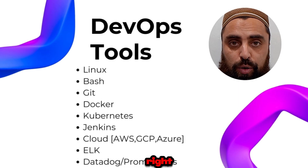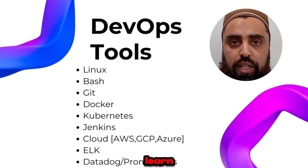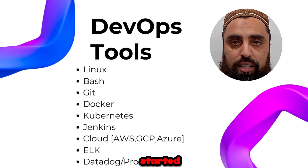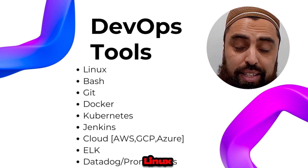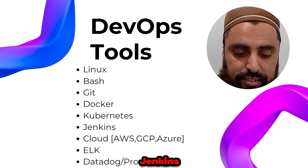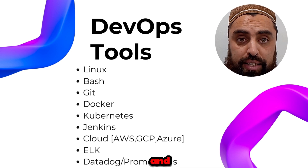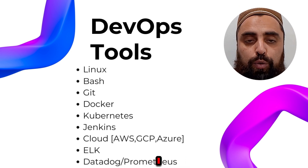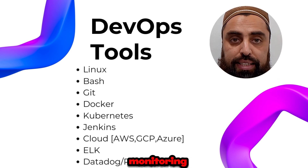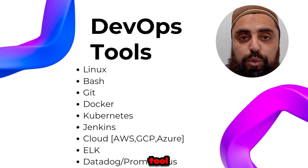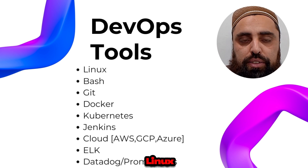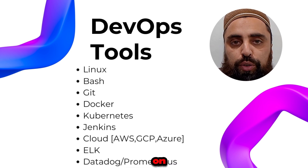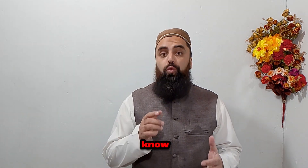The list of DevOps tools is overwhelming, but here are the major tools to start your DevOps career: Linux, Bash, Docker, Kubernetes, Jenkins, cloud platforms like AWS, GCP, and Azure — at least one, and I'd recommend AWS — ELK, and for monitoring, Datadog and Prometheus. Linux is the core tool you must know to become a DevOps engineer, so we'll start with learning the basics of Linux. The most used distribution is Ubuntu, and I recommend installing Ubuntu on your system.